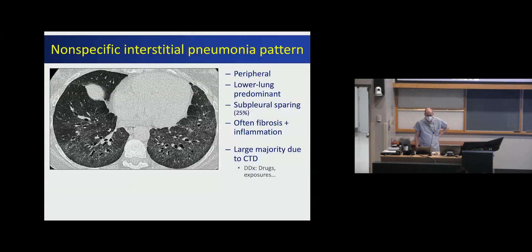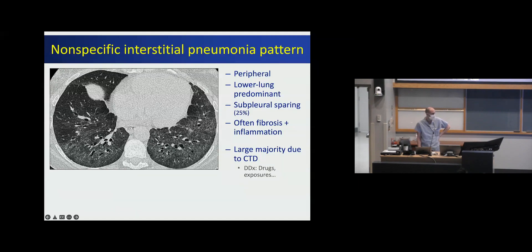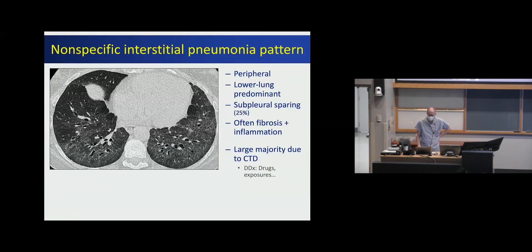To contrast with an NSIP pattern: this is again peripheral and lower lung predominant, but you often get a rim of subpleural sparing, which is a really helpful distinguishing feature from UIP. You typically see a mixture of inflammation and fibrosis — inflammation manifested by ground glass or hazy opacification, in addition to reticulation and traction bronchiectasis more characteristic of scarring.